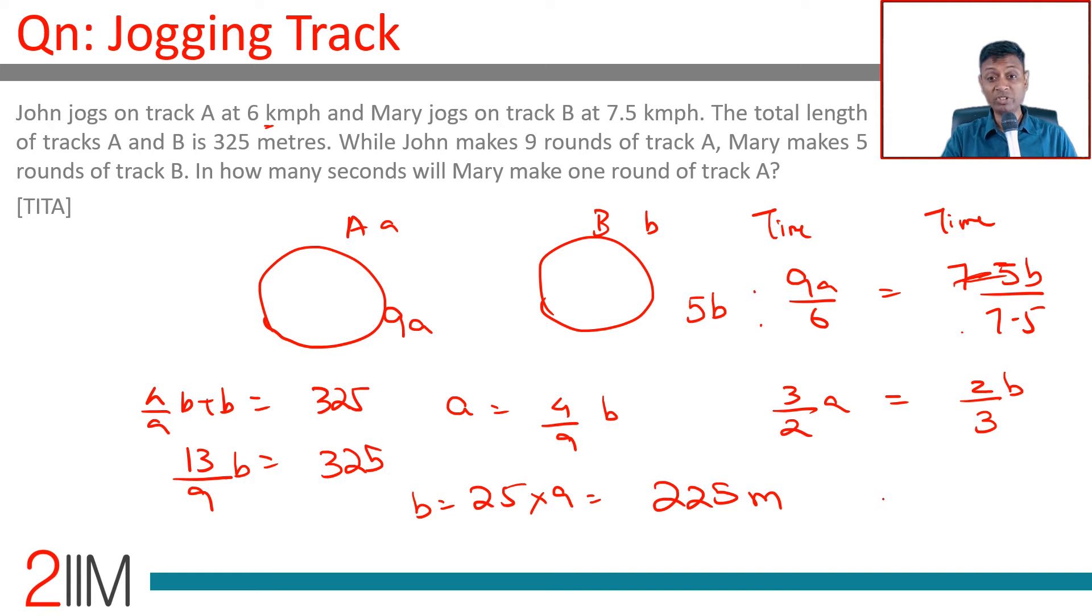In how many seconds will Mary make one round of track A? Total is 325 meters, track B is 225 meters, track A is 4 by 9 of that, or 100 meters. Mary jogs—in how many seconds will Mary make one round of track A? Track A measures 100 meters, Mary jogs at 7.5 kilometers per hour.